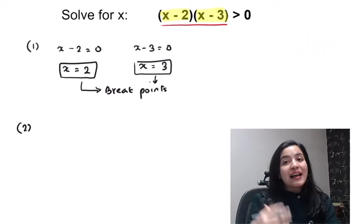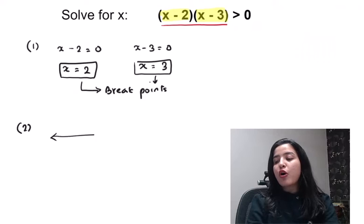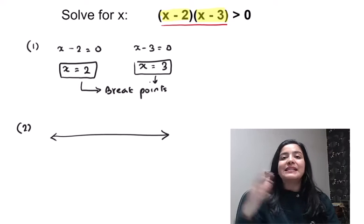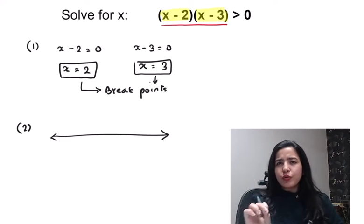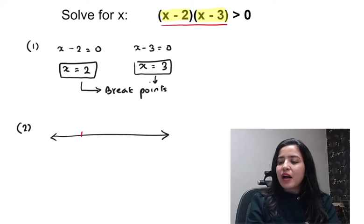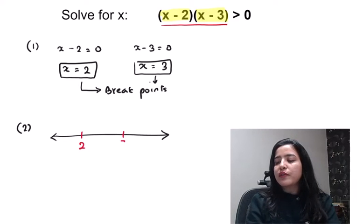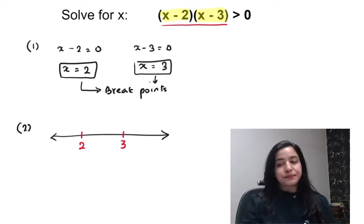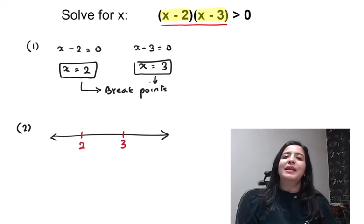Second step. Once you have your break points, you will draw a number line and place them on the number line according to the order. So the smaller number goes on the left and the larger one goes on the right. So two on the left and then three on the right. That's it. So second step. Simple. Put it on the number line.